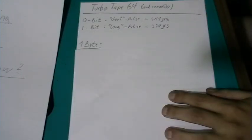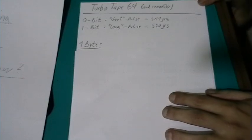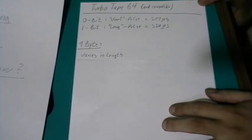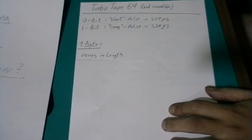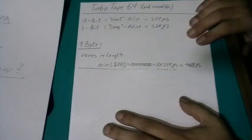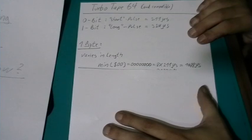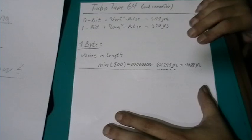So how is a byte written on tape by turbo tape 64? Well it varies in length. Because a zero bit is always represented by a short pulse and a one bit is always represented by a long pulse. A hexadecimal 0080 in a byte uses 8 short pulses of 211 microseconds totaling 1688 microseconds, roughly 1.7 milliseconds.